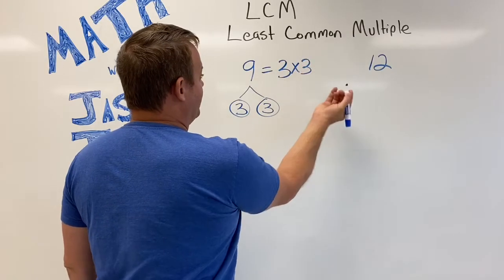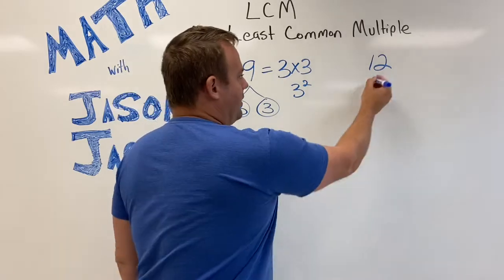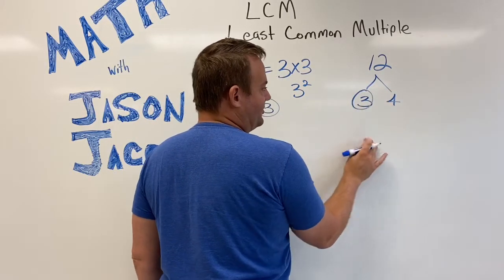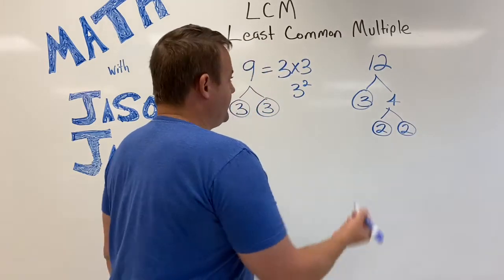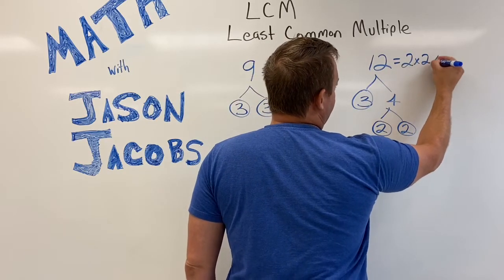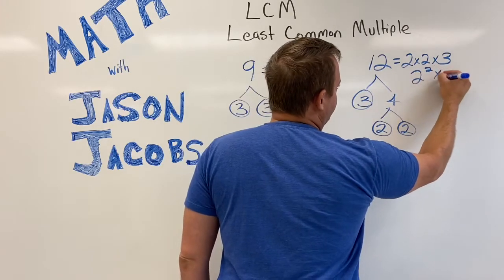12 factors down into 3 times 4. 3 is prime so I'll circle it, and then 4 factors out into 2 and 2. So the prime factorization of 12 is 2 times 2 times 3, or 2 squared times 3.